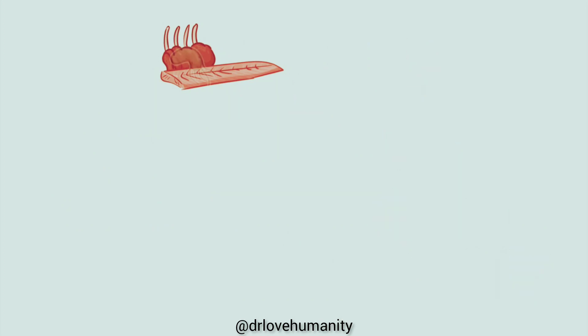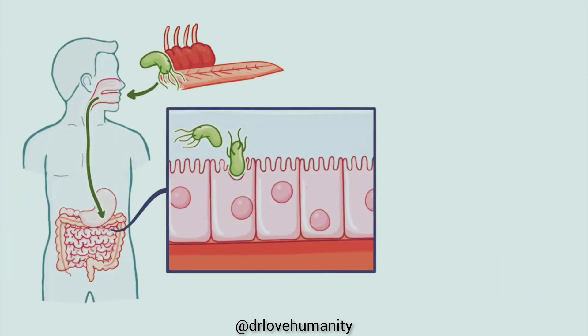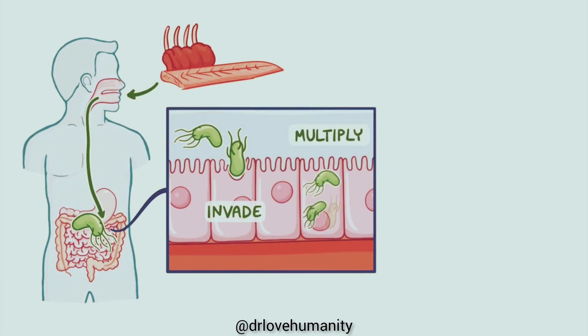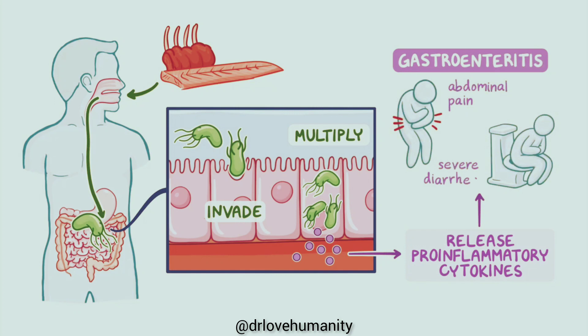When the bacteria are ingested, they travel through the digestive tract, invading and multiplying in intestinal cells. Infected cells then release pro-inflammatory cytokines, causing an inflammatory response. This results in gastroenteritis, or inflammation of the intestinal tract, causing abdominal pain and severe diarrhea.